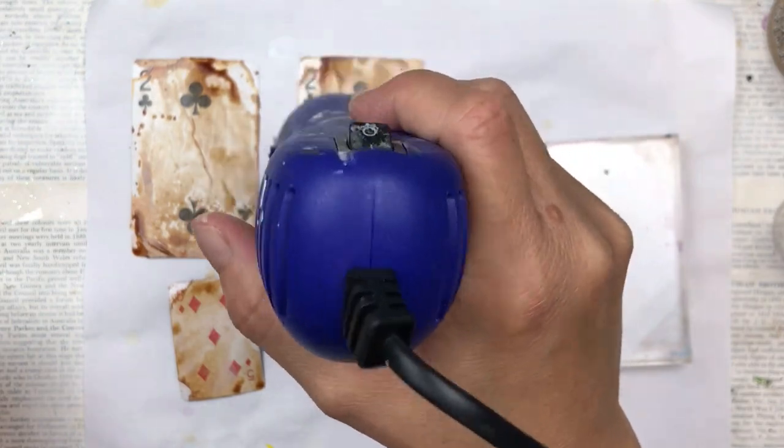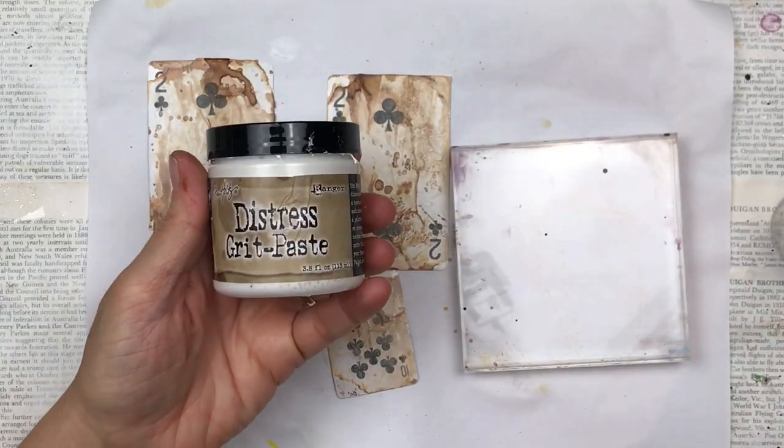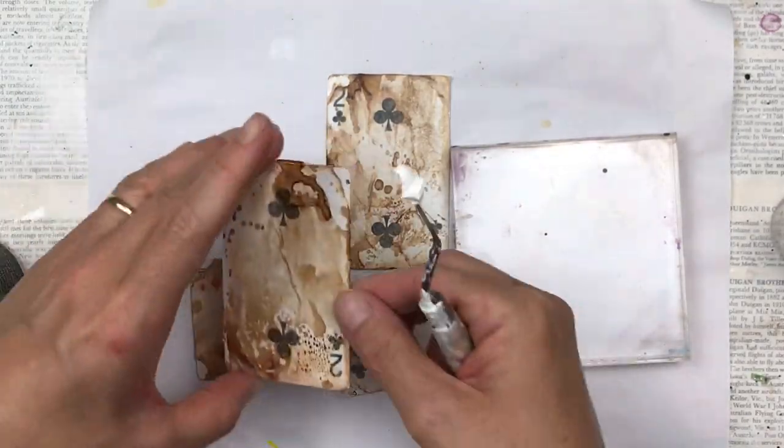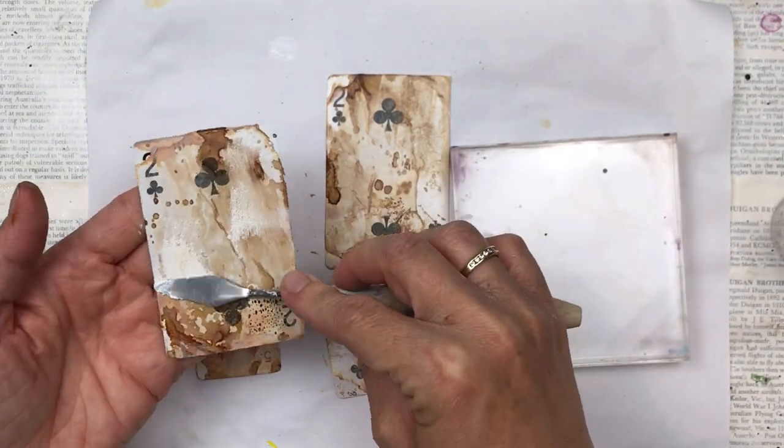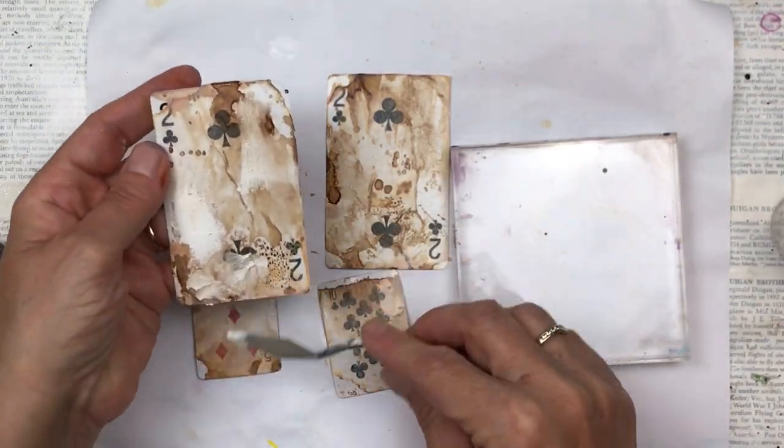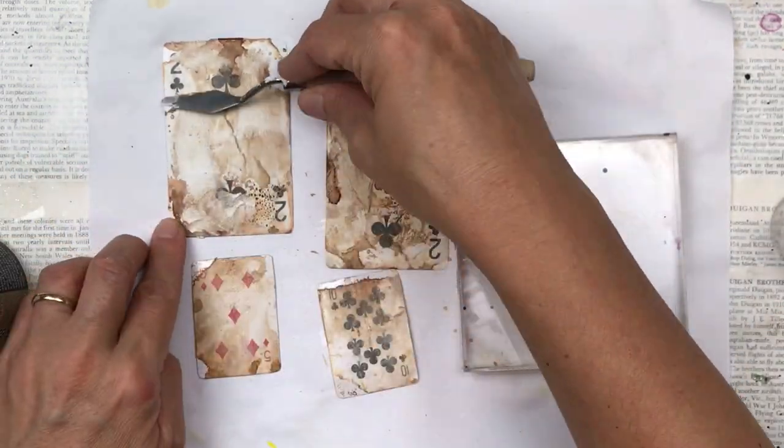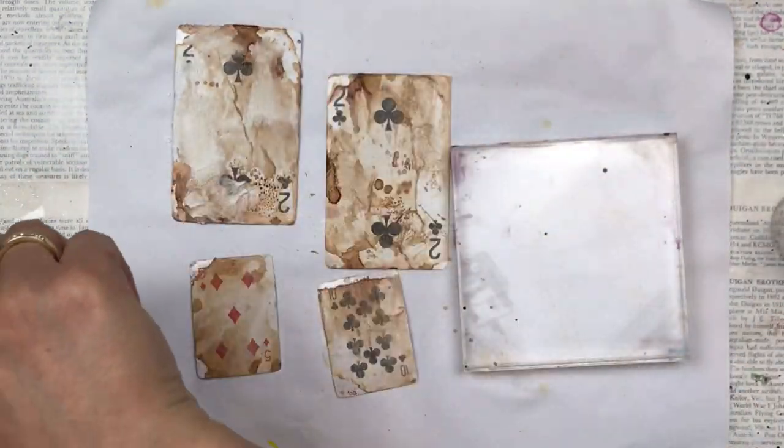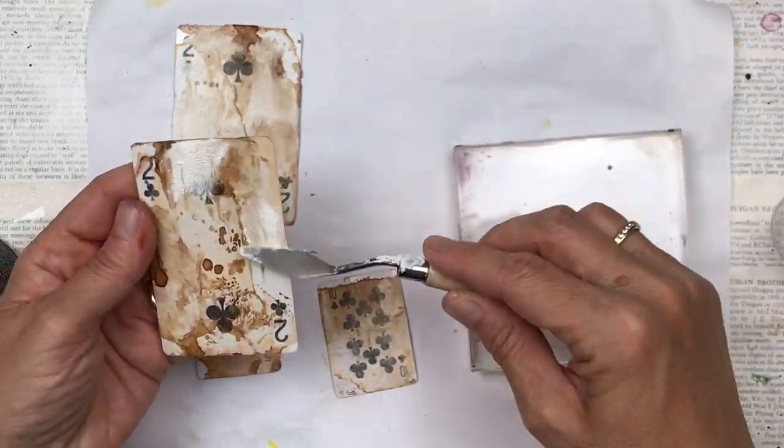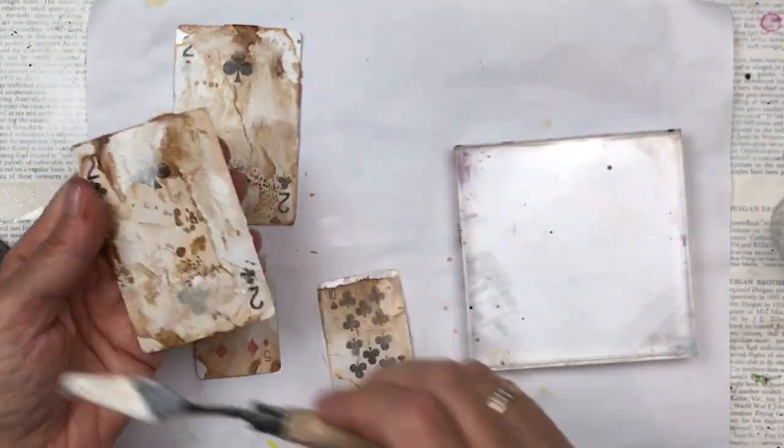They're already looking really nice and vintagey. I'm going to add some grit paste. I apply it with a small palette knife and I just put it in certain areas. I leave some areas quite thick and I spread it over in some other areas. This makes beautiful texture.